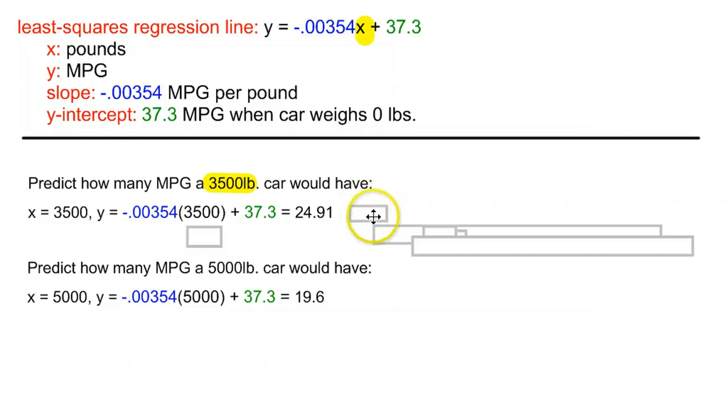So 19.6 is what we expect to get for our gas mileage when our car weighs 5000 pounds. Again, we get that by taking whatever number we have here, plugging it in for x in our original equation that we started with.